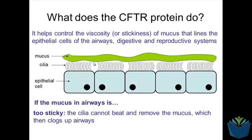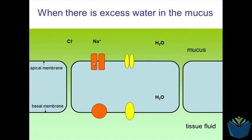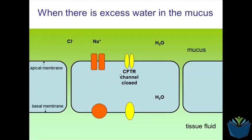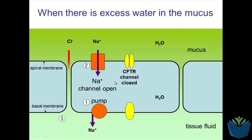If the mucus is too sticky, you cannot remove it and it can clog up the airways, causing problems with gas exchange and increasing infections. If it is too runny, it can flood the airways. There are several scenarios that can happen. This represents our epithelial cell, this is the mucus, and this is the tissue fluid behind the epithelial cells. If this mucus has a large amount of water in it, the CFTR channel - the protein that controls the movement of chloride ions - will actually close. Sodium ions are then pumped out of the cell into the tissue fluid, some sodium ions from the mucus move into the epithelial cells, and some chloride ions can be directly pumped through channels between the cells.